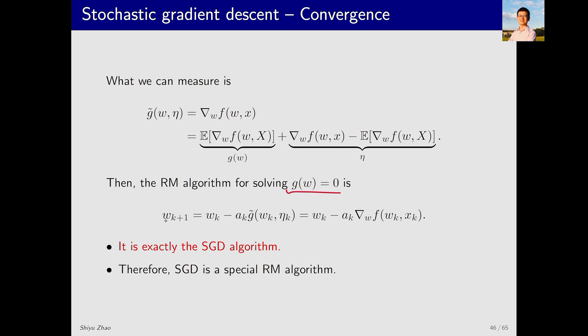Then the corresponding RM algorithm is w_{k+1} equals w_k minus alpha_k times this noisy measurement, G tilde. When we substitute G tilde with the stochastic gradient, the RM algorithm becomes the SGD algorithm. In other words, the SGD algorithm is a special RM algorithm solving a specific problem.